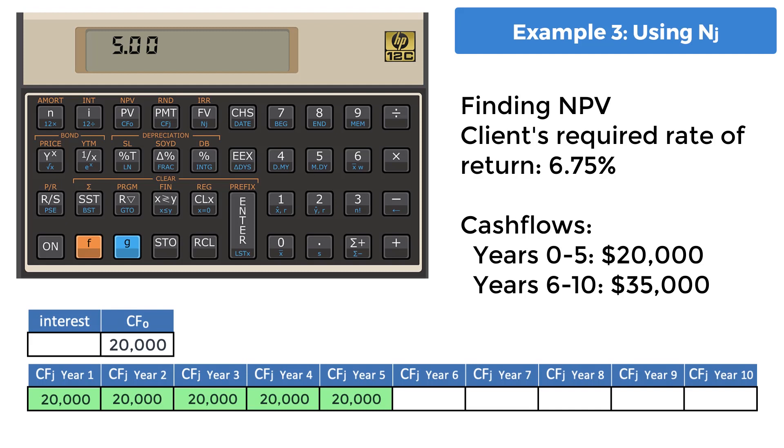Do the same with years 6-10, entering 35,000 into CFJ and enter 5 and use the NJ key. A total of 10 data entries are now in your cash flow memory, plus the value in CF0. The only actions needed to finish this calculation are entering the interest, which is 6.75, and pressing the prefix F to access the NPV.